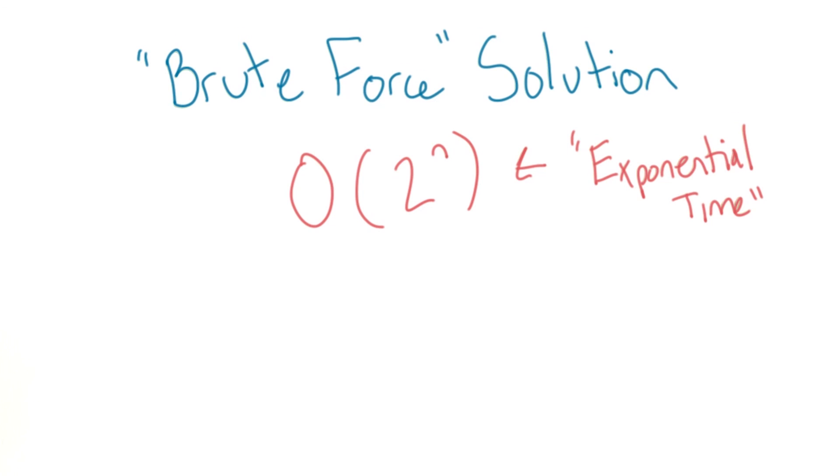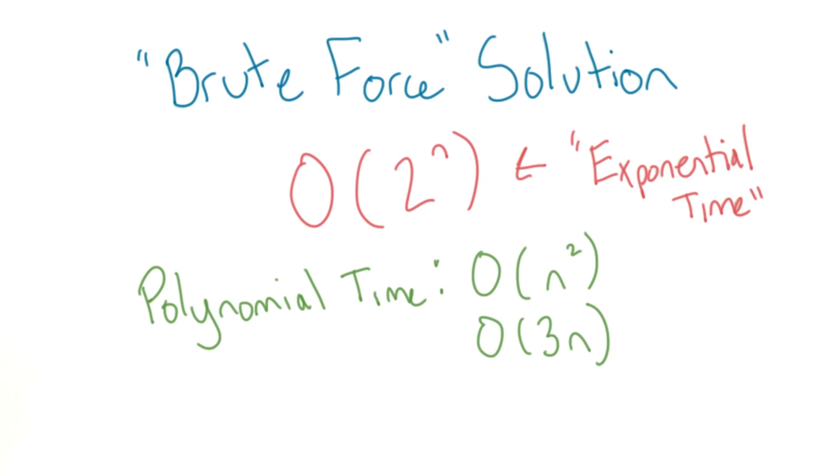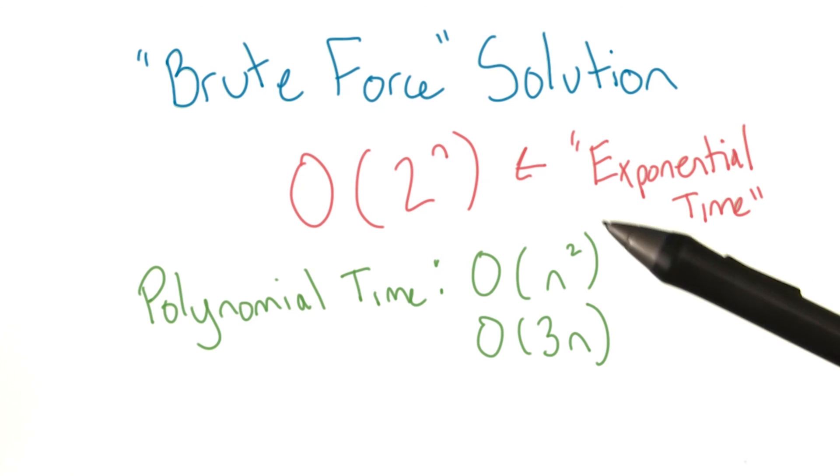Since the n is an exponent, we would prefer a polynomial time algorithm, where the n is multiplied by something else or has a constant number for an exponent, which is going to be much faster for large numbers.